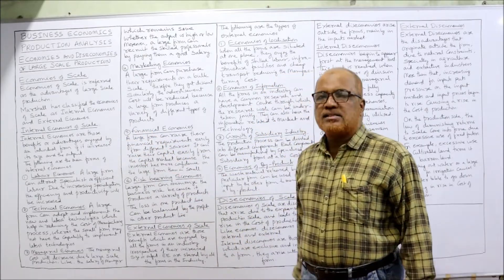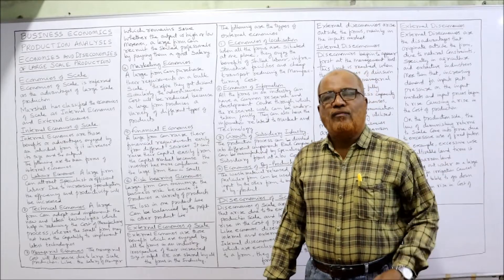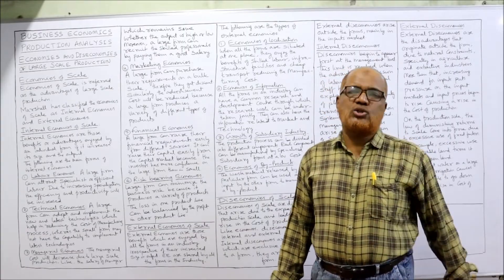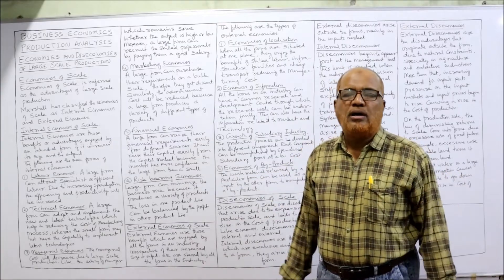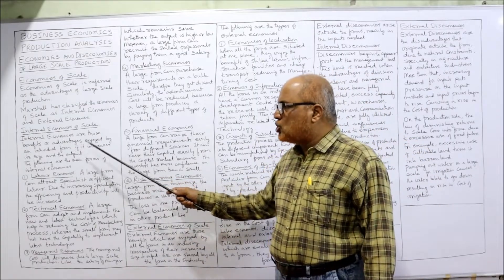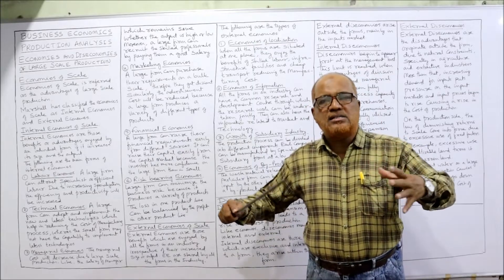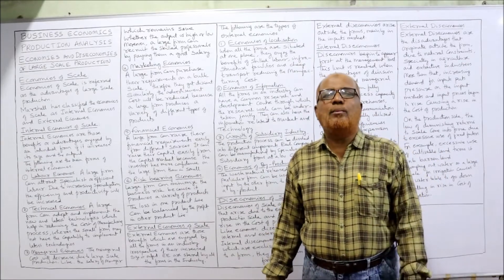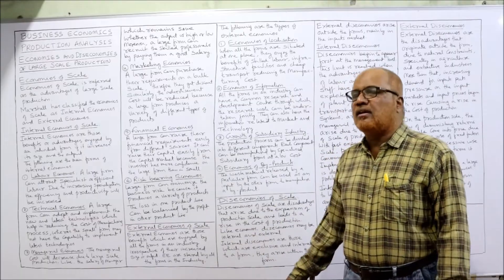Marshall has classified economies into two types: internal economies and external economies. First we'll discuss internal economies. Internal means within the firm — a number of benefits a business will get within the firm when it produces goods on large scale. These are called internal economies. Internal economies are those benefits or advantages enjoyed by an individual firm if it increases its size and output. When a company increases its size or production, the firm gets a number of advantages within itself.